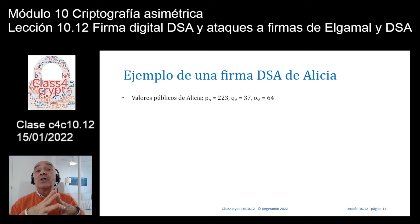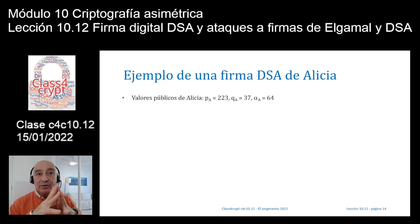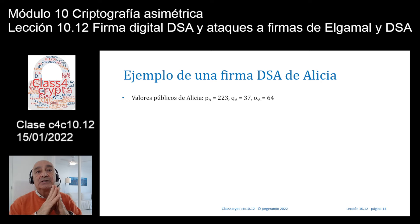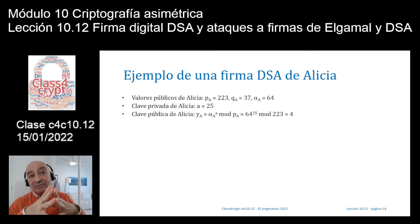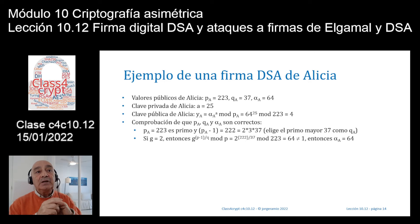Veamos un ejemplo de firma DSA. Los valores públicos de Alicia son: P_A = 223, Q_A = 37, alfa_A = 64. La clave privada de Alicia es a = 25, y su clave pública Y_A = 64^25 mod 223 = 4.